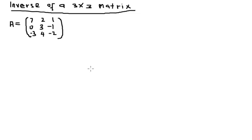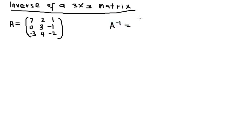In this tutorial video I'm going to show how to find the inverse of a 3x3 matrix. In the previous tutorial we did a 2x2 matrix. The first thing we do is write out the formula, which is always the same: A inverse is equal to the transpose of the cofactor divided by the determinant of the matrix in question. In this case we have matrix A equal to this value here.